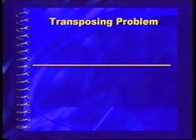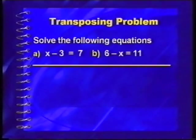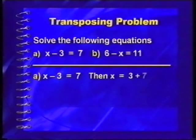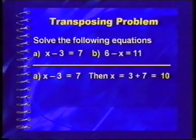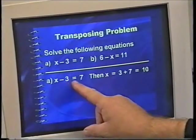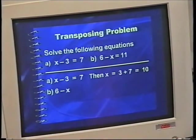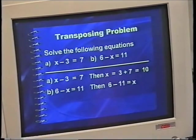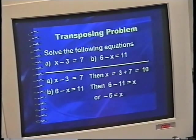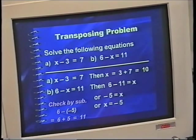Transposing problems: if X minus 3 equals 7, bring the negative 3 to the other side — it becomes positive 3 — and X equals 10. Check by substitution: 10 minus 3 equals 7. For 6 minus X equals 11: transpose to get 6 minus 11 equals X, so negative 5 equals X, or X equals minus 5. Check by substitution again.